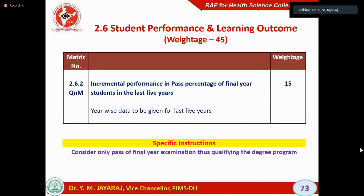This is a quantitative question where marks depend upon your results over the last five years. If it is more than 95%, you get full marks. Less than that, the marks keep reducing. If you get less than a particular percentage of results, you get zero marks. But the results are already on the university website for your college. If any college has got more than 95% results in the last five years, you get 15 out of 15.